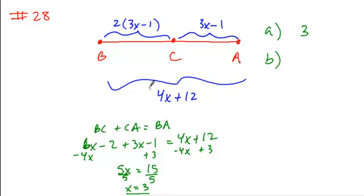So if we want to find what AB is equal to, simply plug in our 3 here. 4 times 3 is 12. Plus 12 gives us a total of 24.